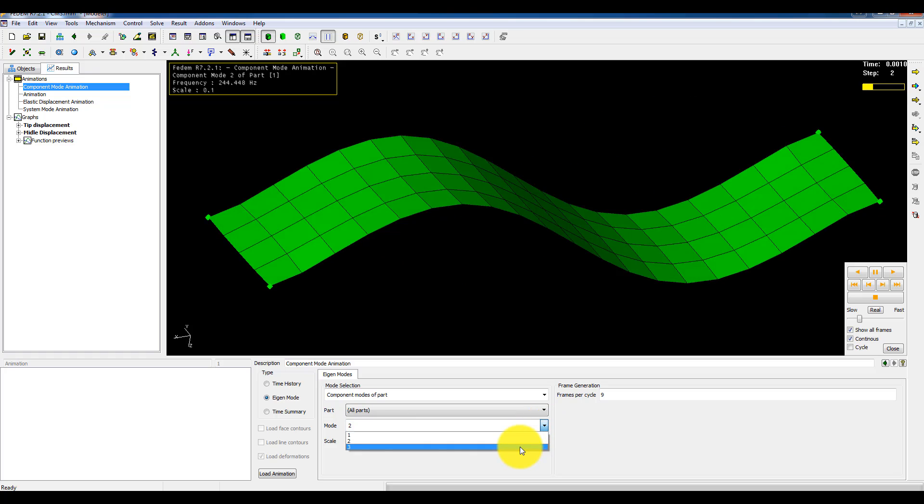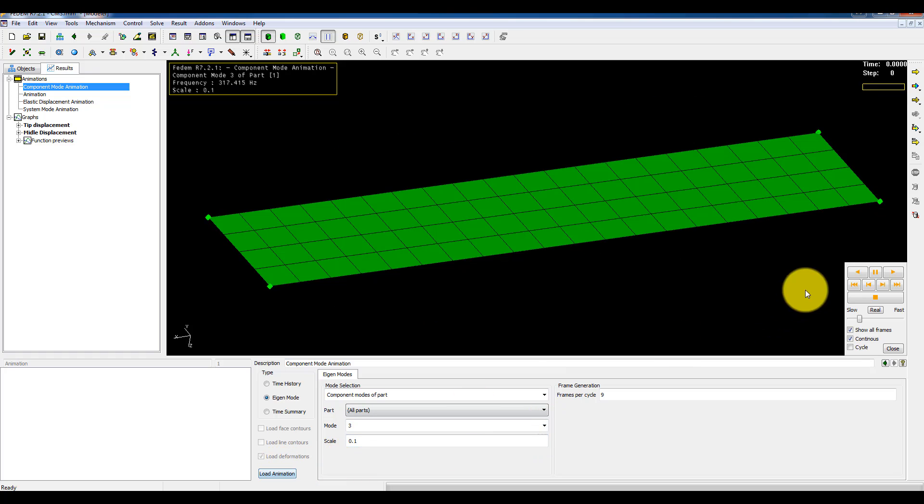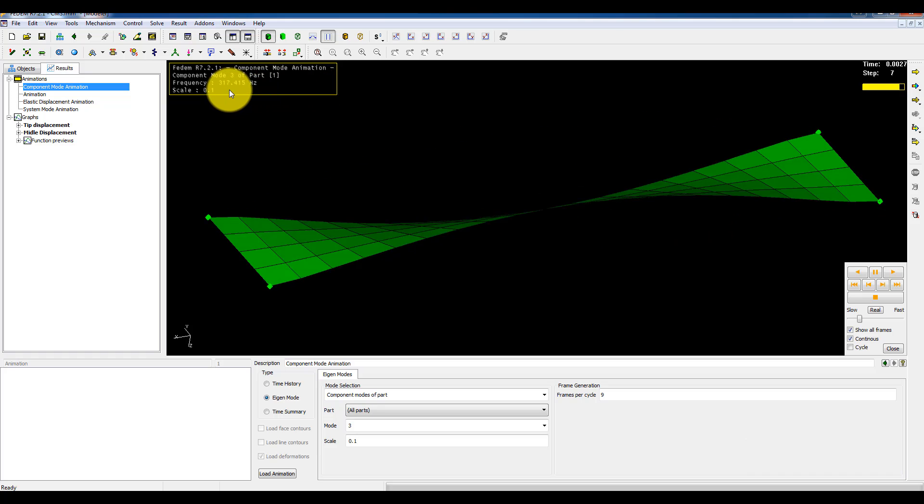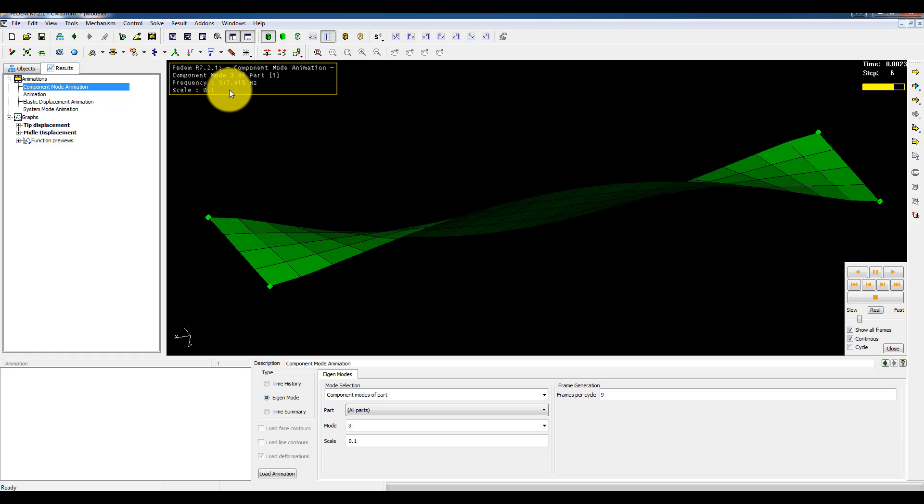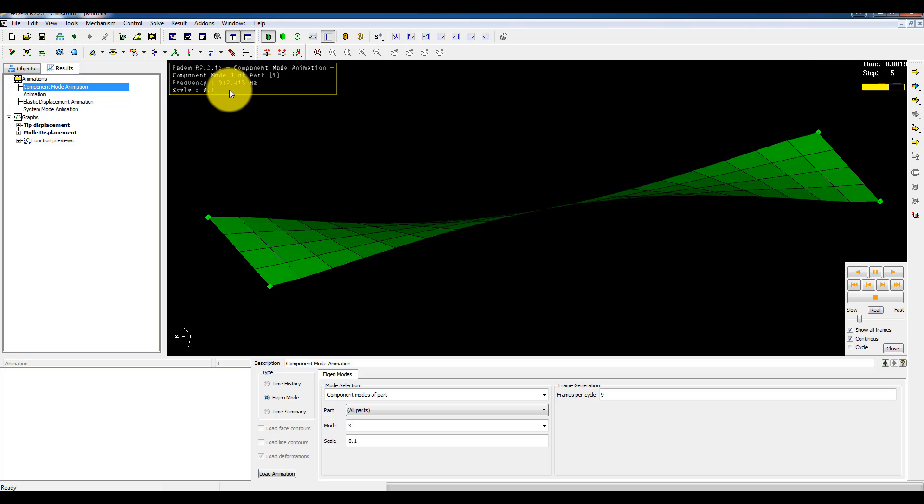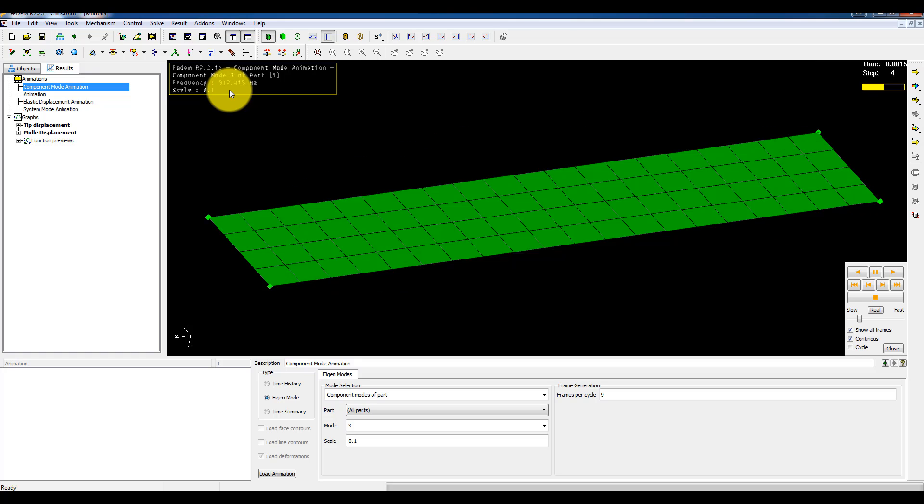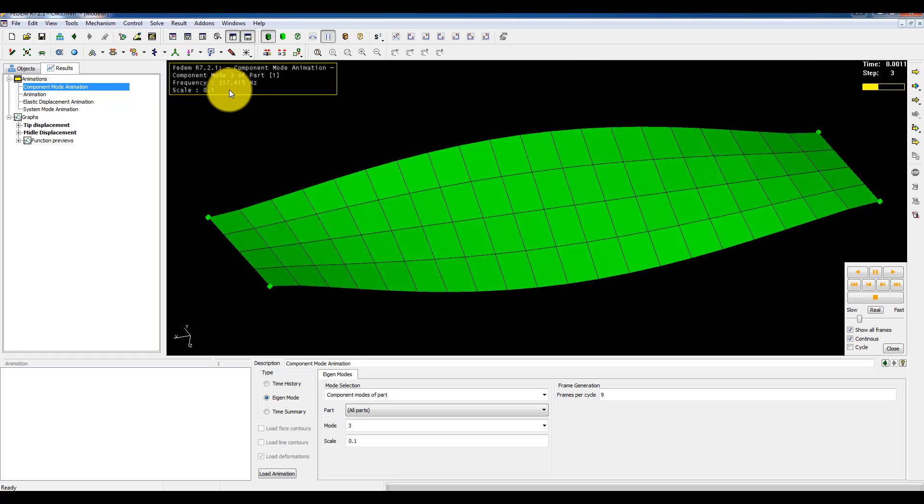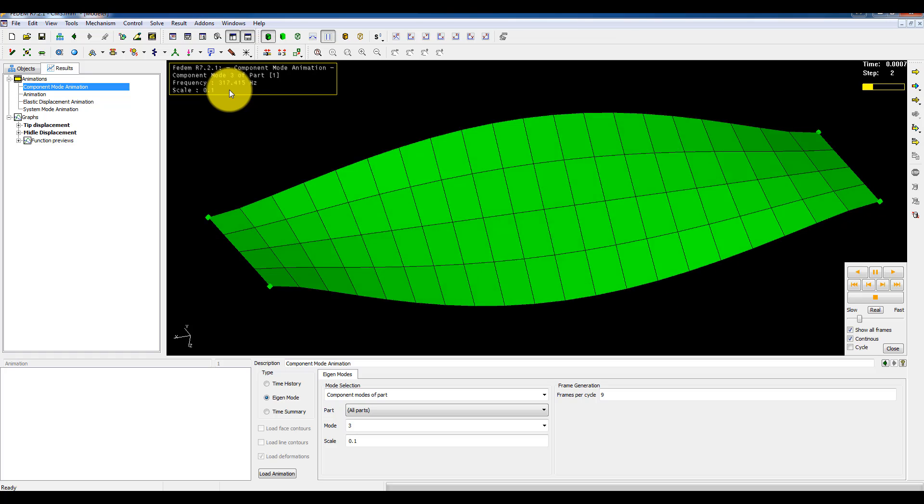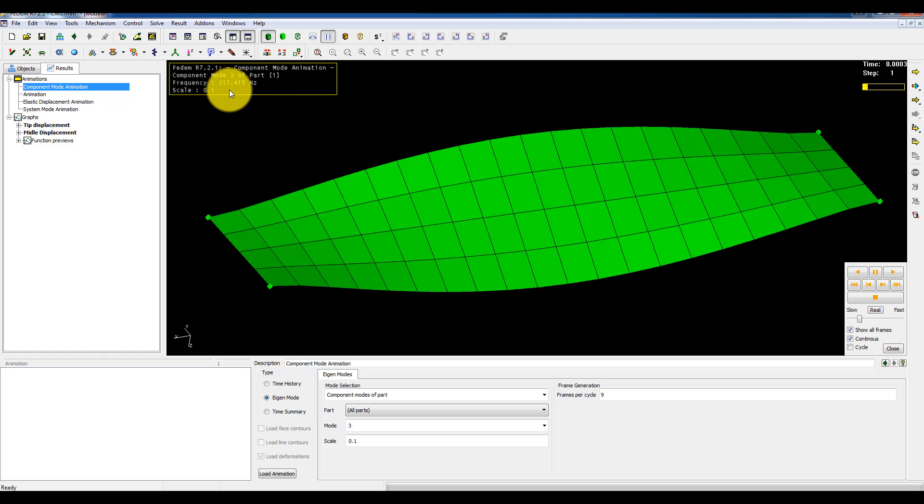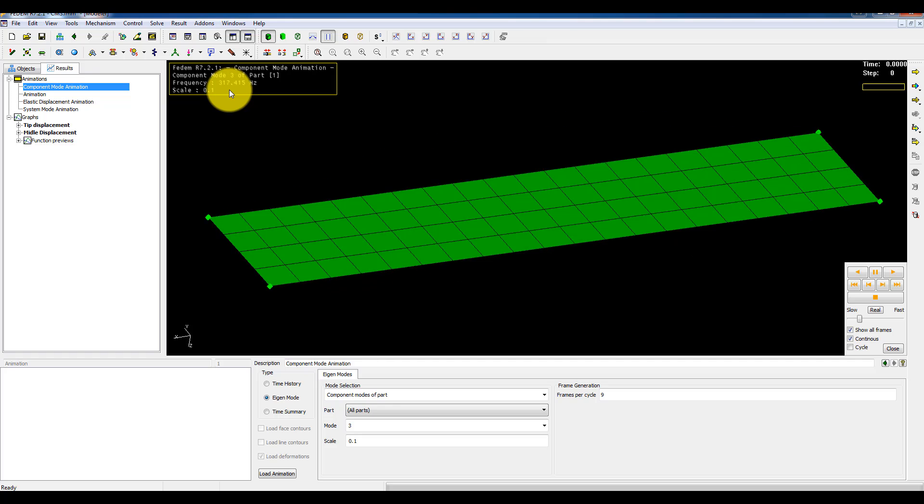Then have a look at the last one. It's a torsional mode. And it has an eigenfrequency of 317 Hz. And again you have to ask if you need this one in order to capture the distribution of strains and stresses in this structure.